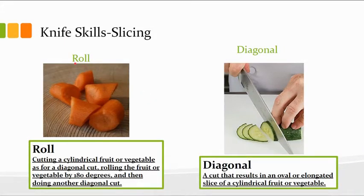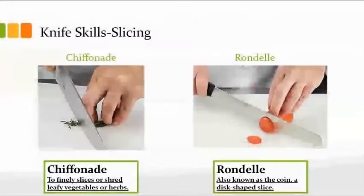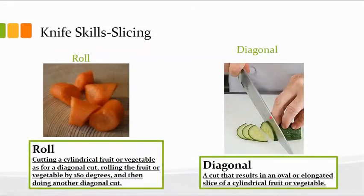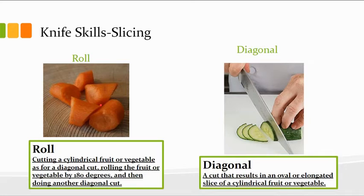This one right here is called the roll cut. Its end result is a trapezoid type shape. You usually take a cylindrical fruit or vegetable and start cutting it as you would cut a diagonal — a diagonal is essentially like a coin, except instead of going down at a 90-degree angle, you end up turning it about 45 degrees and cutting at an angle. For every slice that you do, you then roll the vegetable over 180 degrees — what was on top is now touching the cutting board and what was touching the cutting board is now on top — and then you cut again. This is really great for stews and things like that when you're looking for those bigger, heartier bites.